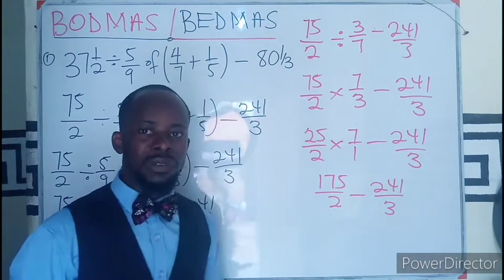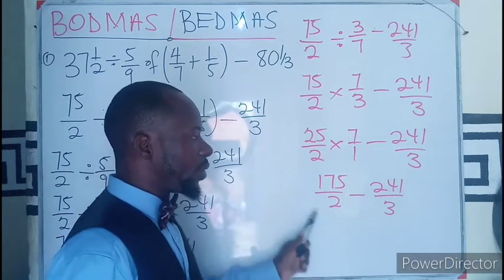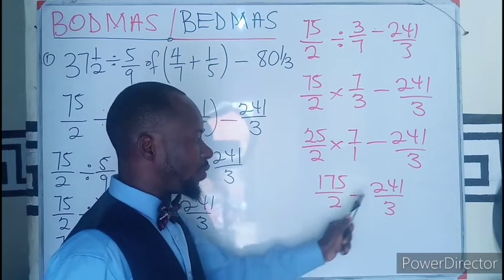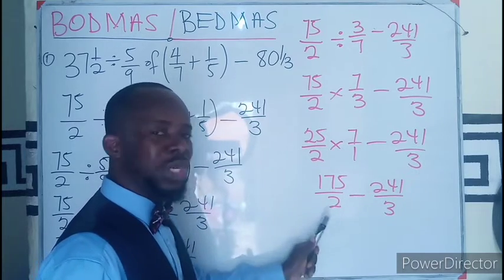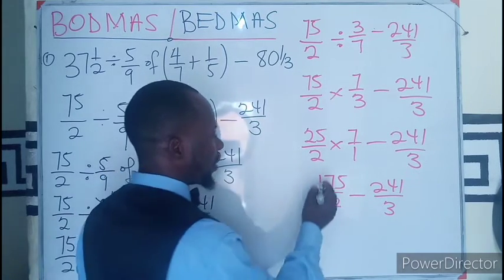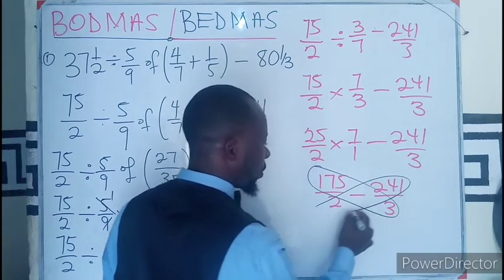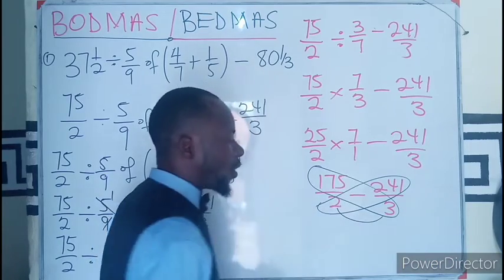Per our rule of subtraction, we can still use our butterfly method here, whereby this will multiply this, you get your answer. This will multiply this, get your answer. Divide by the multiplication of this. As in, you multiply, you multiply, subtract the result, then multiply your denominators.